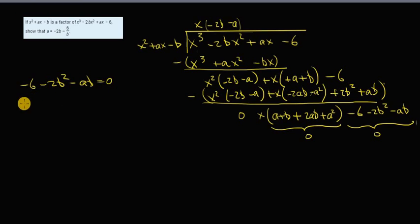If I get my ab over to the far side, that means -6 - 2b² = ab. And divide across by b. I'm going to get (-6 - 2b²)/b = a. And that's what we're looking for. So we're done.